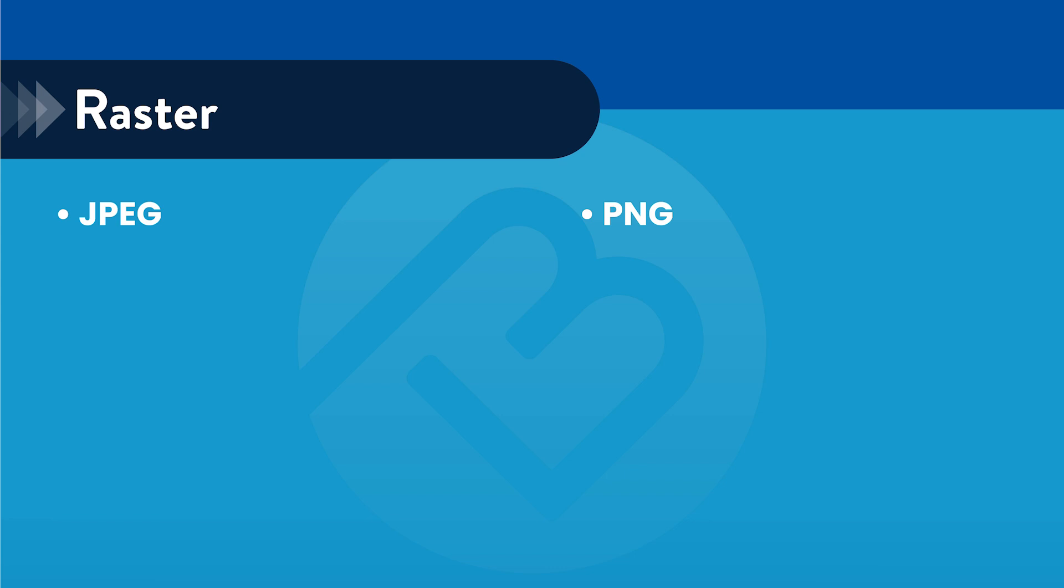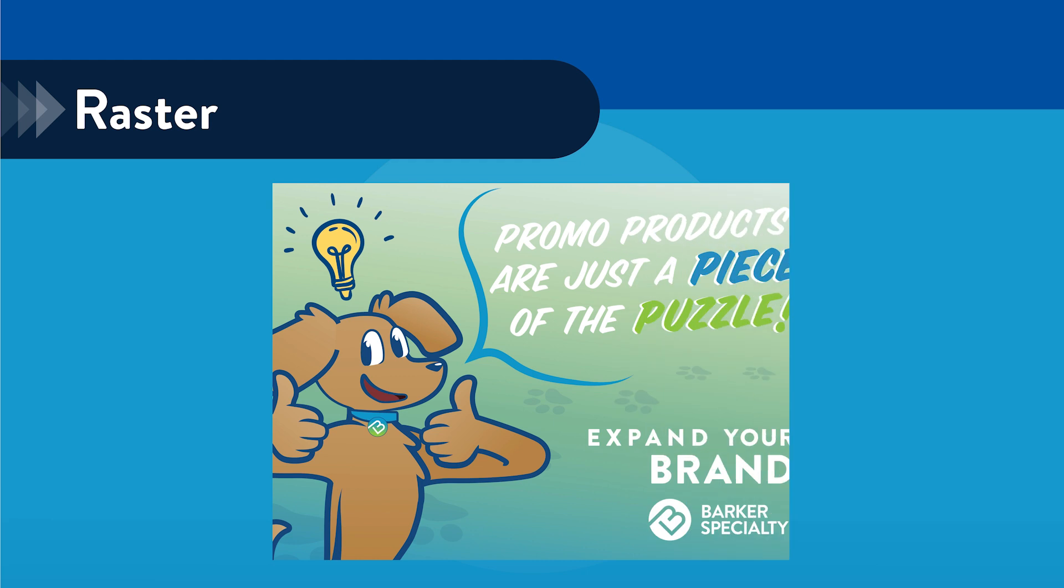Common file formats for raster images include JPEG, PNG, GIF, and BMP. Raster images are great for complex images with lots of details and color gradients, like photographs.